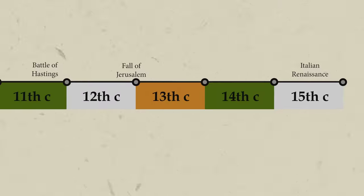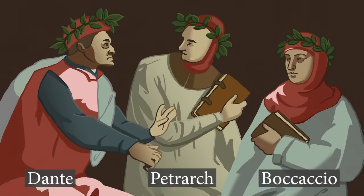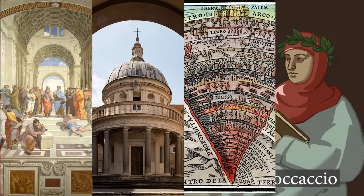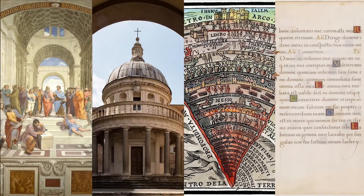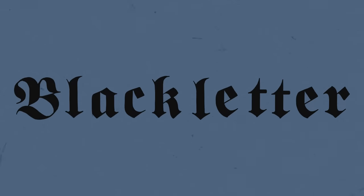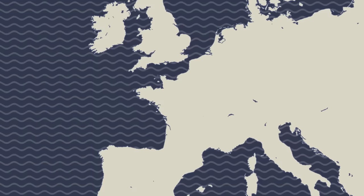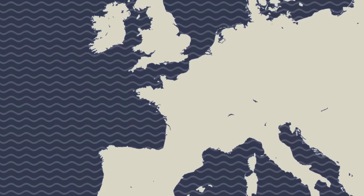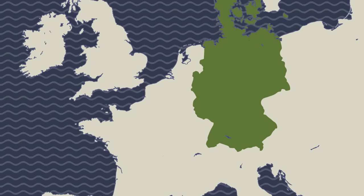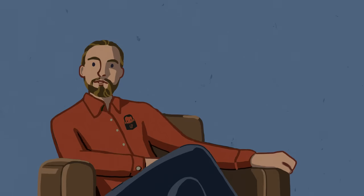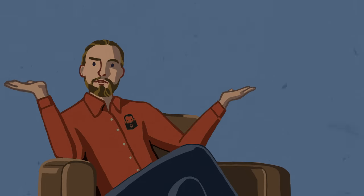Skipping forward about 700 years, we come to the Renaissance Humanists. The Humanists were a group of secular thinkers who rejected what they saw as a superstitious, backwards medieval world — why do we call the medieval period the Dark Ages? Blame the Humanists. They were interested in a revival of Roman ideals in art, architecture, literature, and yes, even in typography. They weren't fans of the dominant script of the time: Black Letter. This script, sometimes incorrectly called Gothic, is probably what you think of when imagining medieval writing. It took over from the Carolingian script and was used for hundreds of years throughout Europe.